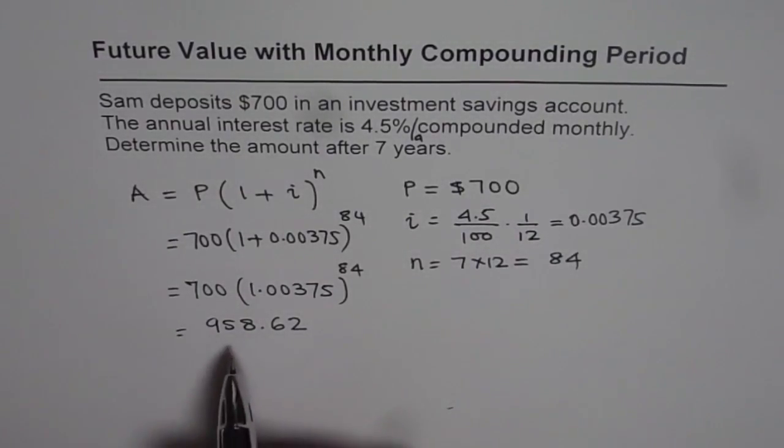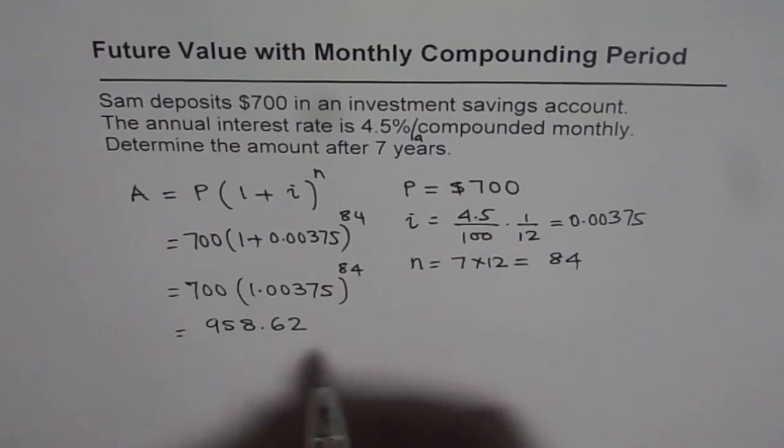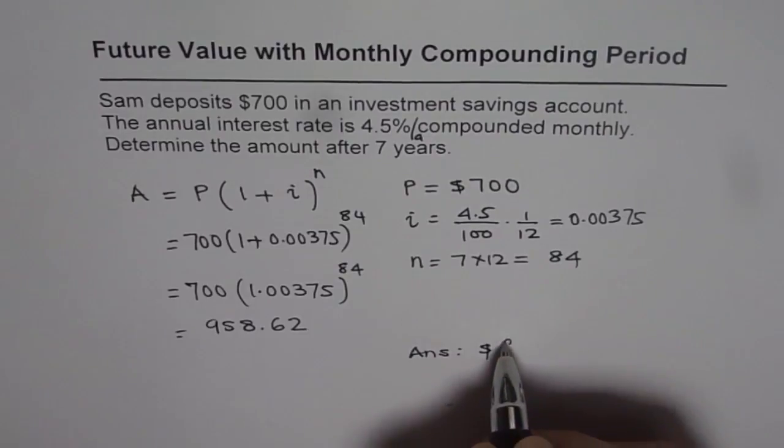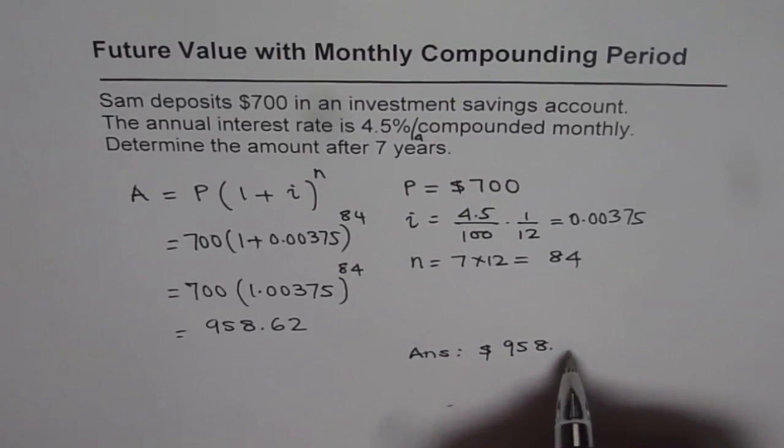Therefore the future value after 7 years is going to be $958.62.